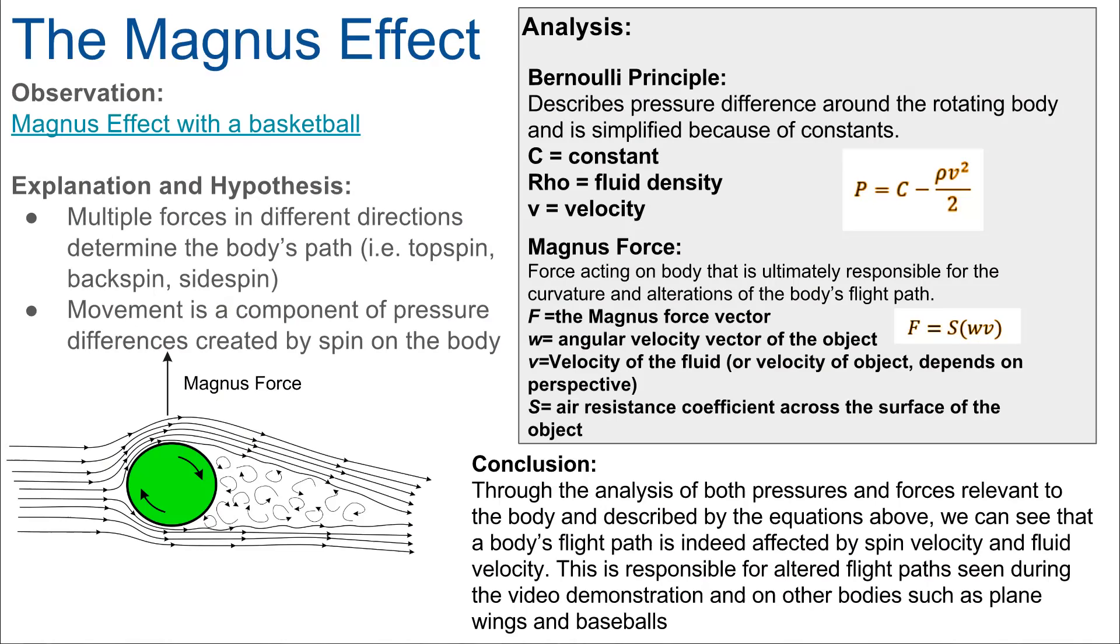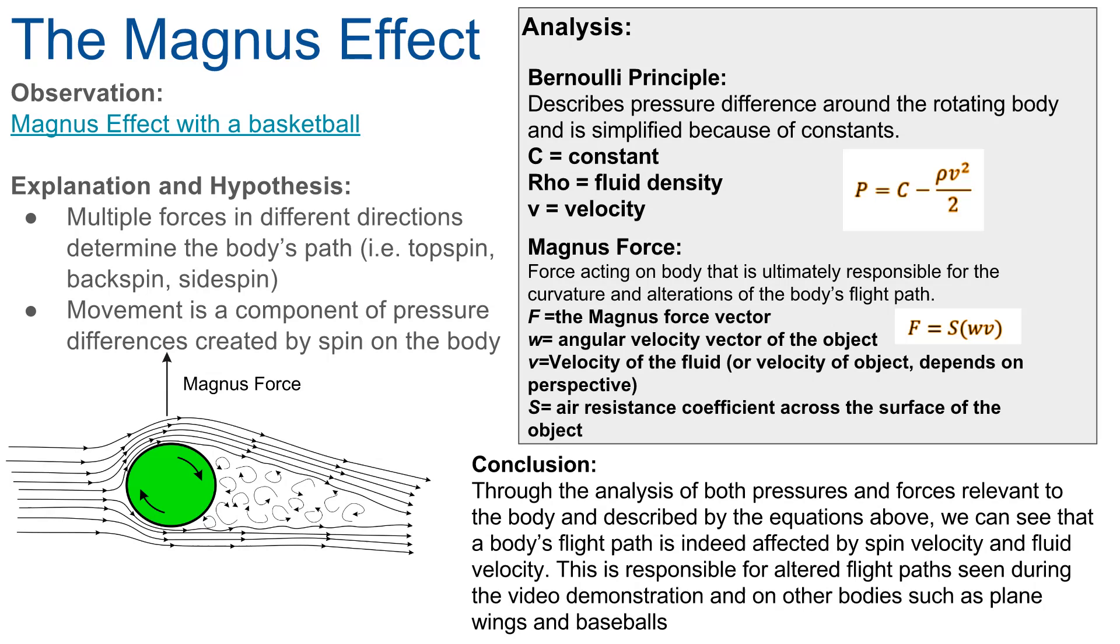Our hypothesis and explanation include the following listed on the left side of our slide. Multiple forces in different directions determine the ball's path. These forces include topspin, backspin, and sidespin. The spin on the body creates velocity differences above and below which create different pressures around the body as well as a force that lifts the body, known as the Magnus force.